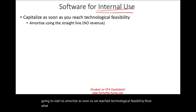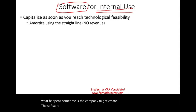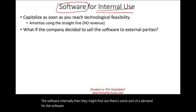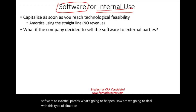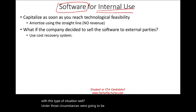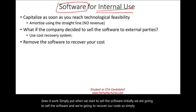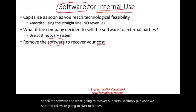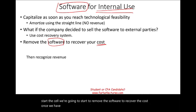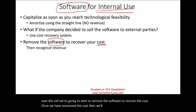Sometimes a company might create software internally and then find out there is some demand for the software externally. They're going to start to sell the software to external parties. How do we deal with this situation? Under those circumstances, we're going to use a cost recovery system. When we start to sell the software, initially we are going to sell it and recover our costs — we debit cash and credit the software asset rather than revenue. Once we have recovered the full cost, then we start to treat any additional sales as revenue.